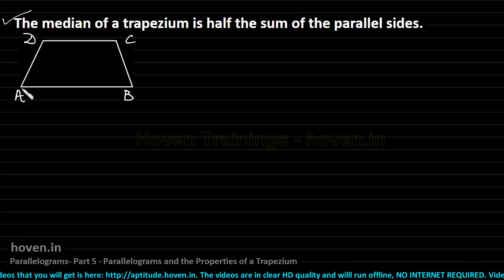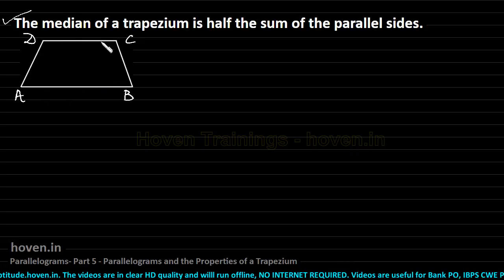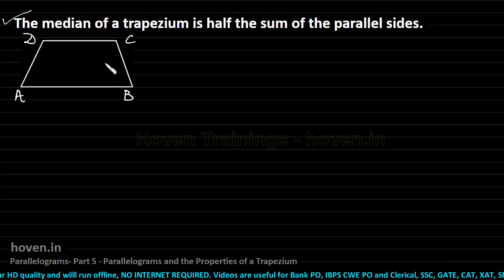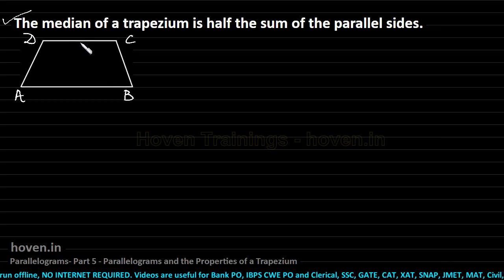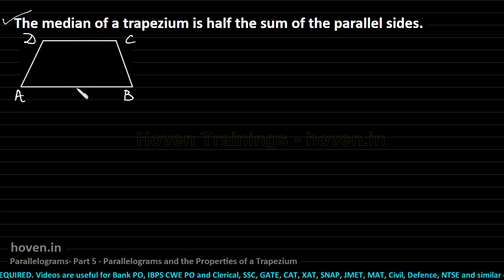The opposite sides are AB and CD. If AB is parallel to CD and the other pair is not parallel, then this is a trapezium. If the other pair is also parallel, then it becomes a parallelogram. But if only one pair of opposite sides is parallel, then such a situation is called a trapezium.